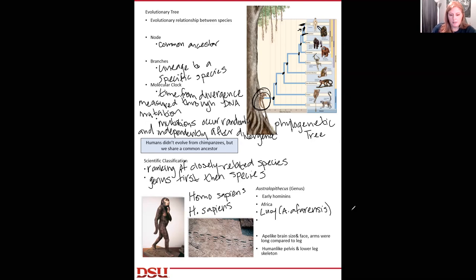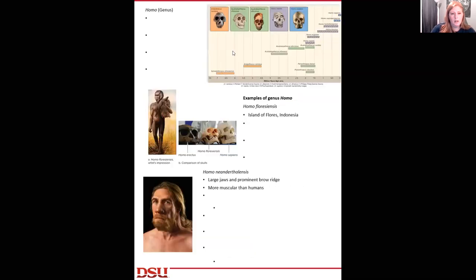The Australopithecus genus eventually gave rise to the Homo genus. Some of the characteristics of Australopithecines: they had an ape-like brain size and face, their arms were long compared to their leg, they have that longer arm to leg ratio, human-like pelvis and lower leg skeleton because of being able to walk upright.